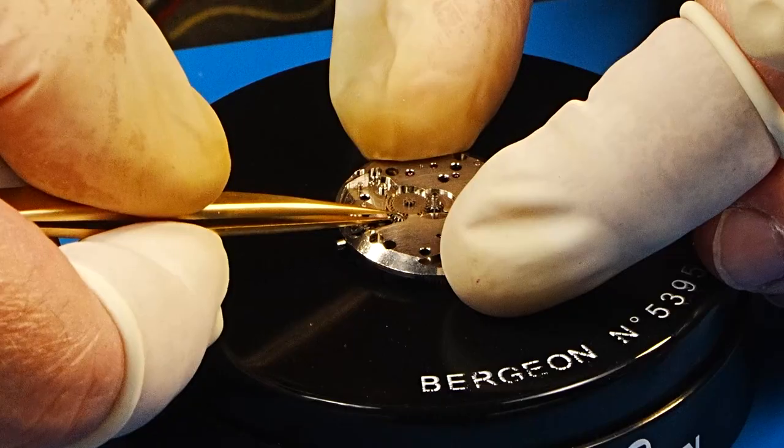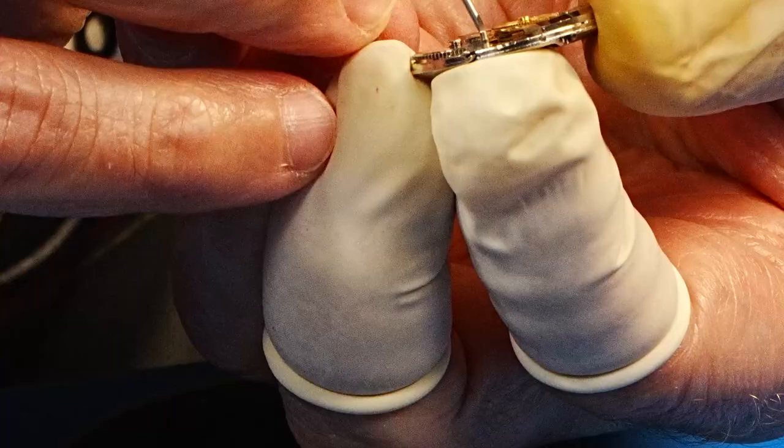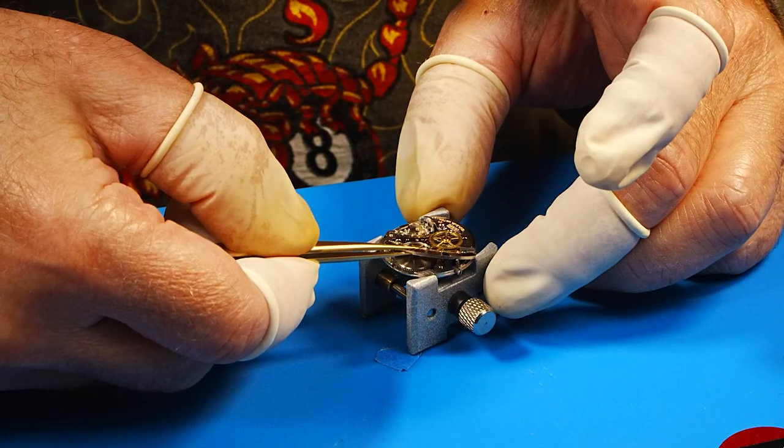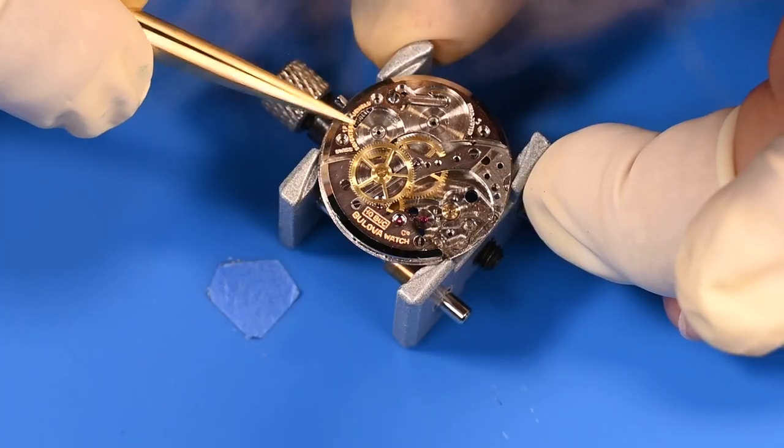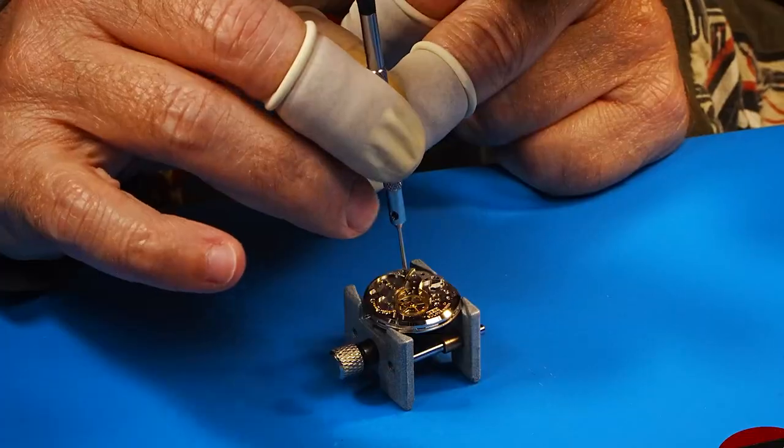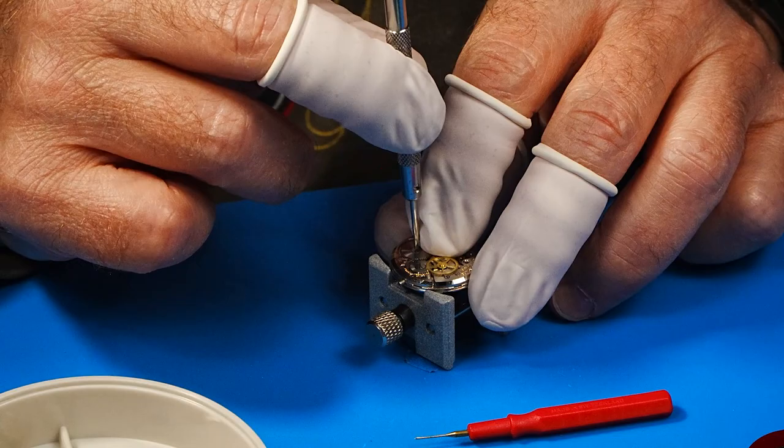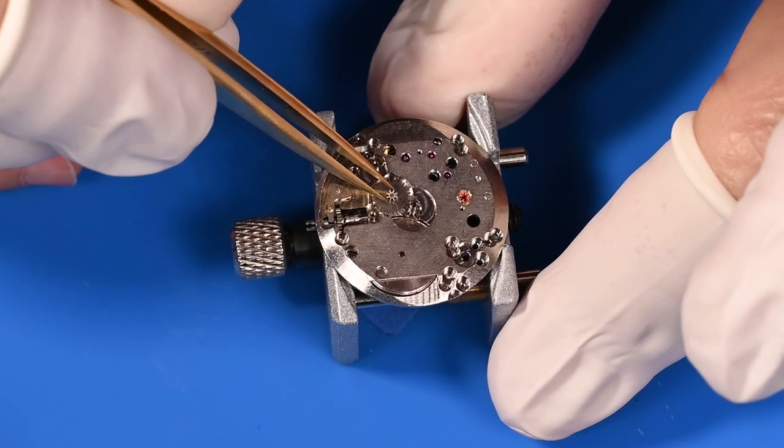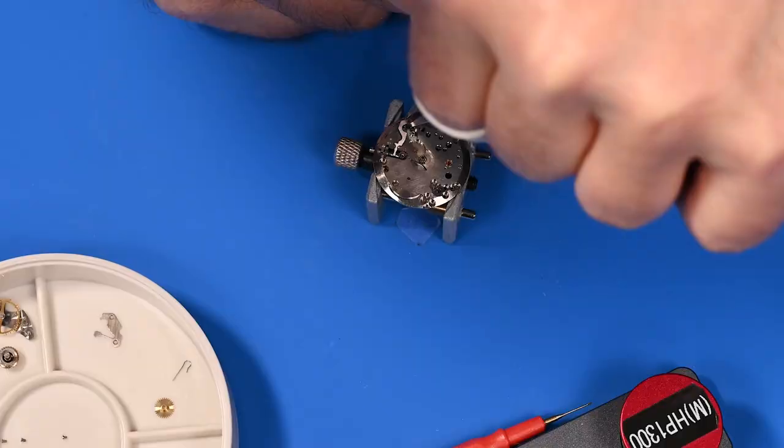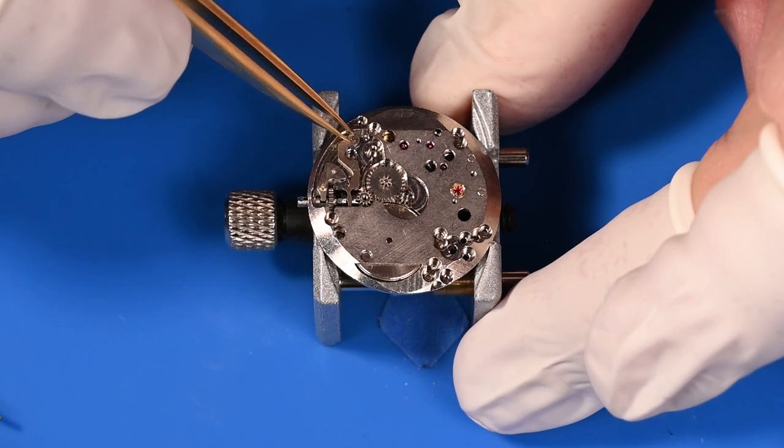Now I'm going to remove the minute wheel and the setting wheel just so when I turn it over it doesn't flop out. Now I can put in that setting lever post while holding the setting lever with my index finger. We'll put the barrel bridge back in place. I think we got it. We can put the crown wheel and the ratchet wheel back in place. Now we'll flip the movement over. Replace the minute wheel and setting wheel. Lubricate the setting lever. Move it around a little bit. And now we can put the yoke in place. The yoke rides in that groove on the winding stem. A little bit of lubrication. A little bit of cleanup on aisle nine.